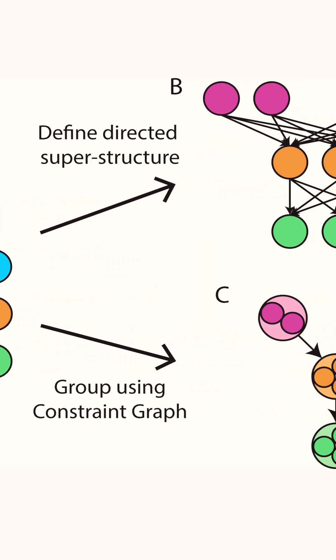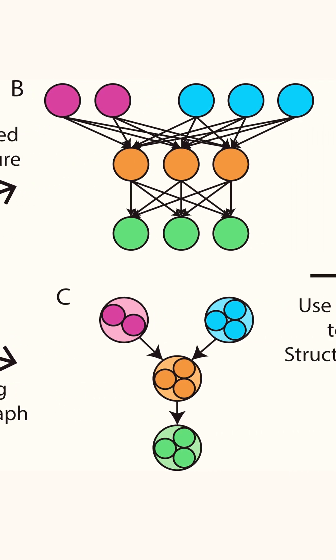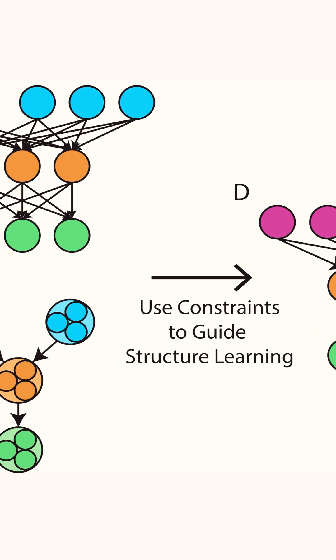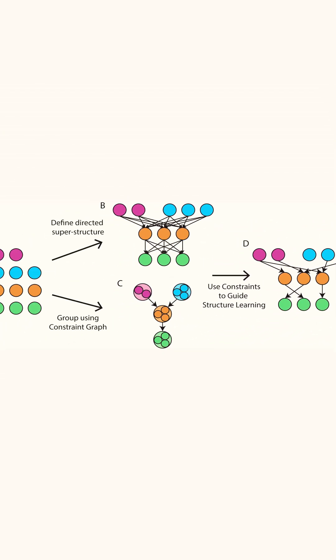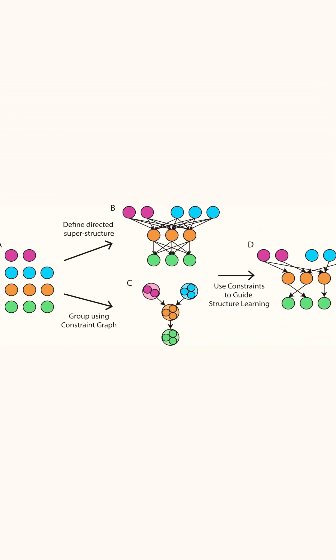Bayesian networks are a type of probabilistic graphical model that represents a set of variables and their probabilistic dependencies. These networks allow AI systems to reason about uncertain information and make decisions based on probabilities.